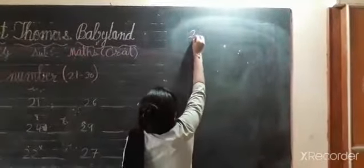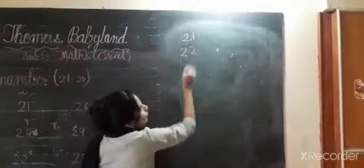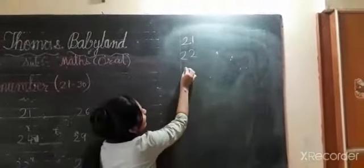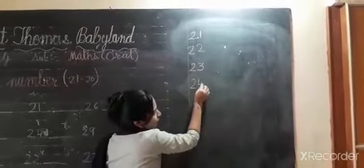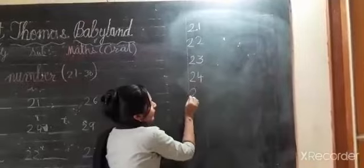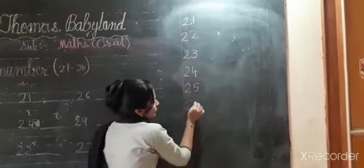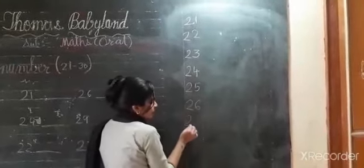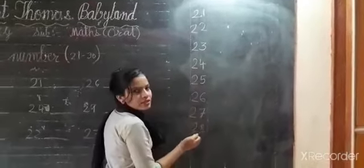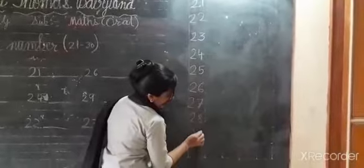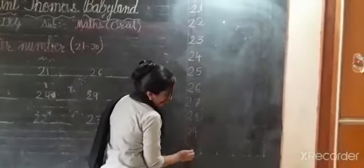21, 22, 23, 24, 25, 26, 27, 28, 29 and 30. Okay?